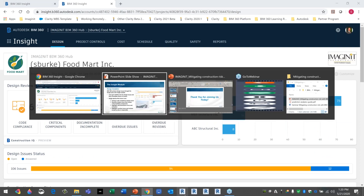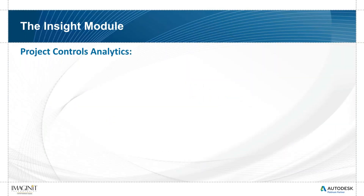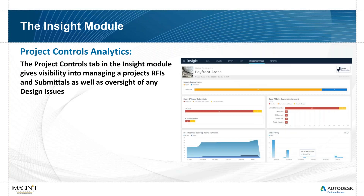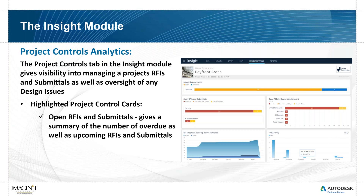Moving on to project control analytics. This gets more into the construction and pre-construction area — where architectural, engineering, and structural firms may hand off or a GC continues, unless it's a design-build. The project control analytics provide oversight for the whole project, mainly focusing on RFIs, submittals, and any design issues. We have cards for open RFIs and submittals, open RFIs by current assignment, submittal activity, and overdue information.